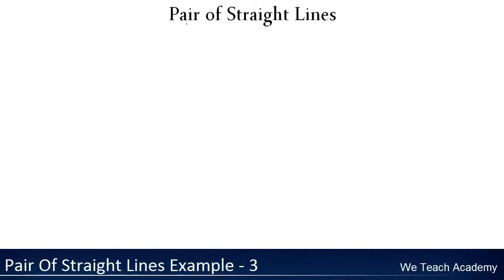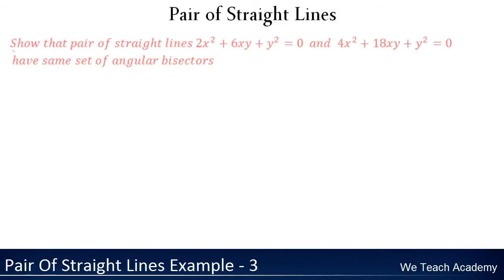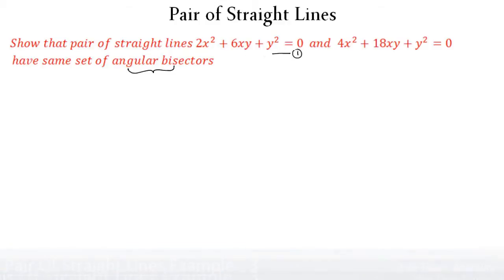Hello friends, welcome to Vidish Academy. Here we are going to discuss an example under the concept of pair of straight lines. We need to show that the pair of straight lines — equation 1 and equation 2 — have the same set of angular bisectors. So we need to find the angular bisectors of both pairs. Let us name the first pair as equation 1 and the second as equation 2.